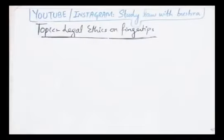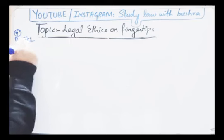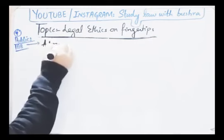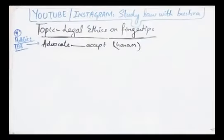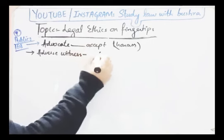Uske baad aati hai last category par: 'Conduct of an Advocate with regards to the General Public.' Ab public ke saath uska kaisa rawiya hoga, Rule 168 se start hota hai. Pehli baat: 'Not accept employment for the purpose of harassing anyone.' Advocate kabhi bhi aisi koi bhi employment accept nahi karega kisi bhi case ke andar — chahe woh prosecution side se hai ya defense side se — jiska main purpose sirf aur sirf kisi doosre person ko harass karna ho. Jahan par kisi person ki harassment ki niyyat hai, aap uska case accept nahi karoge.